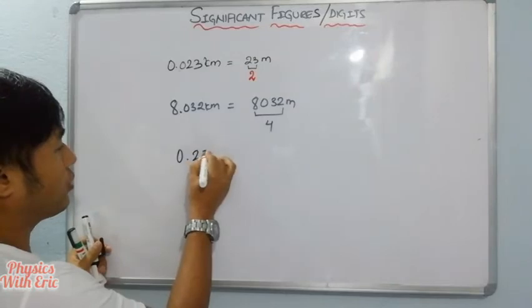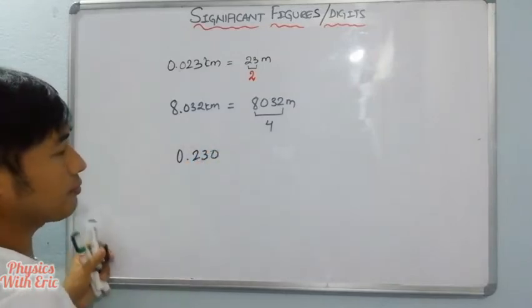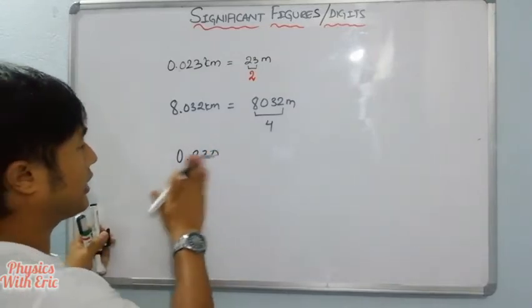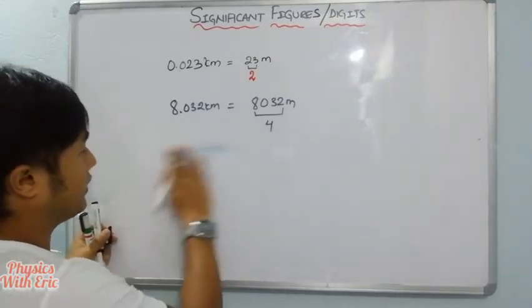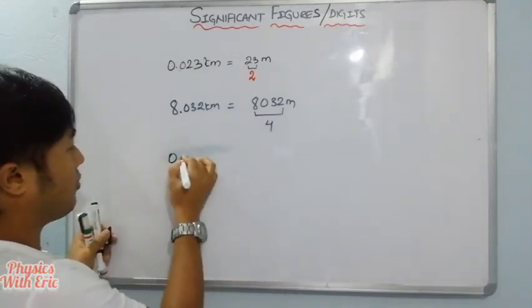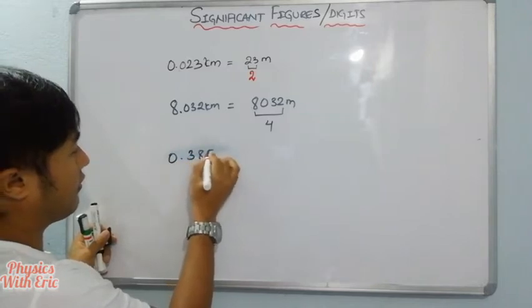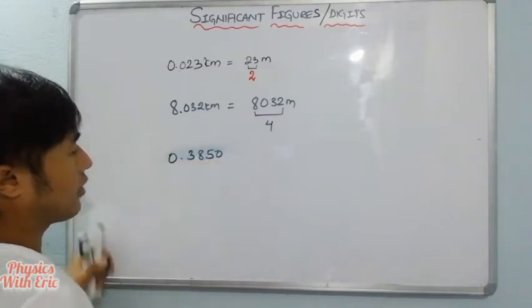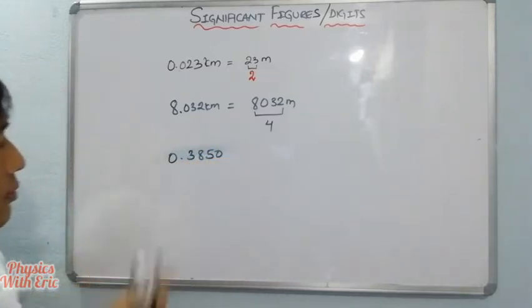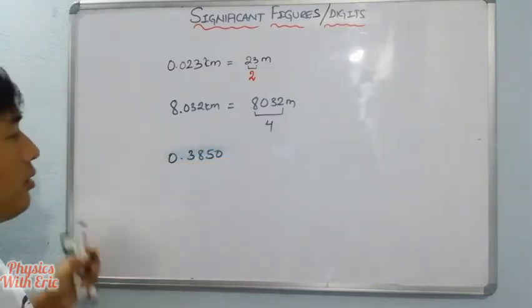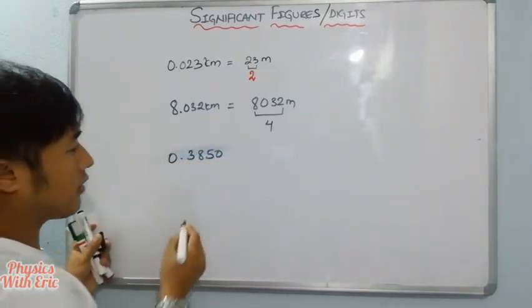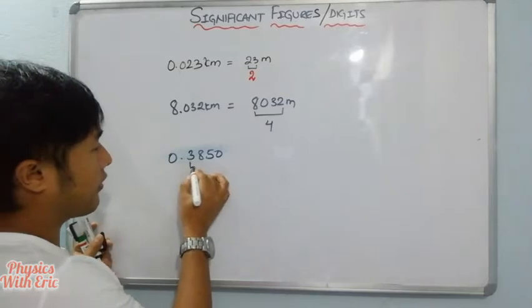For numbers like 0.230 or 0.3850, we need to count the significant figures carefully.